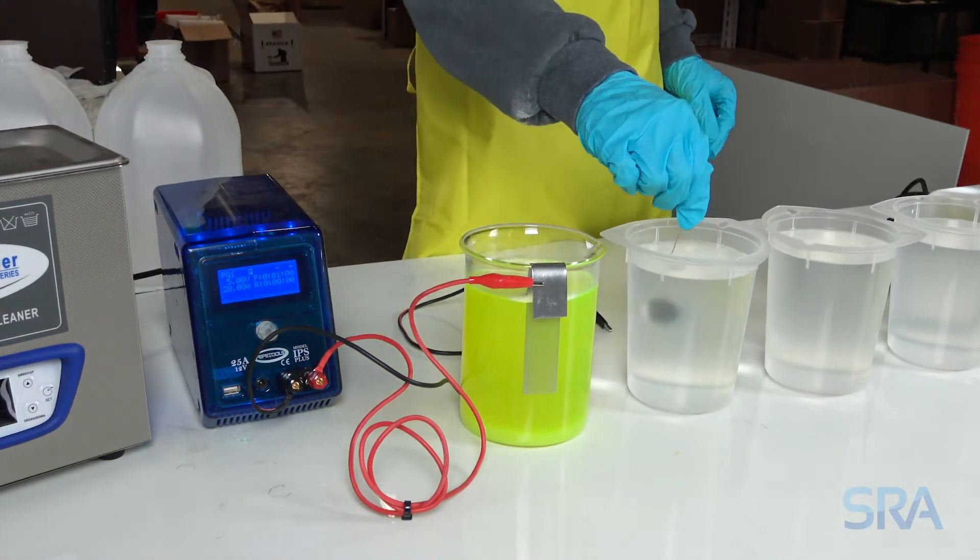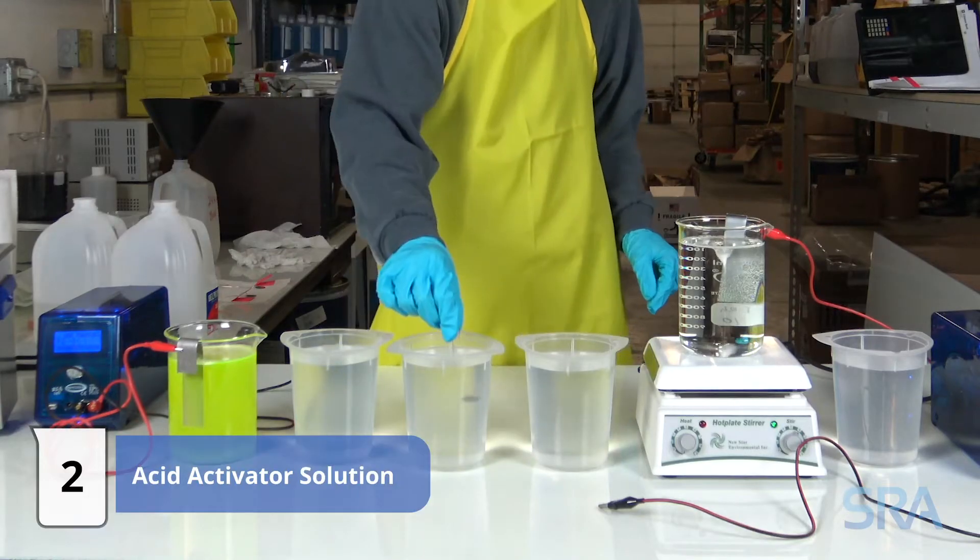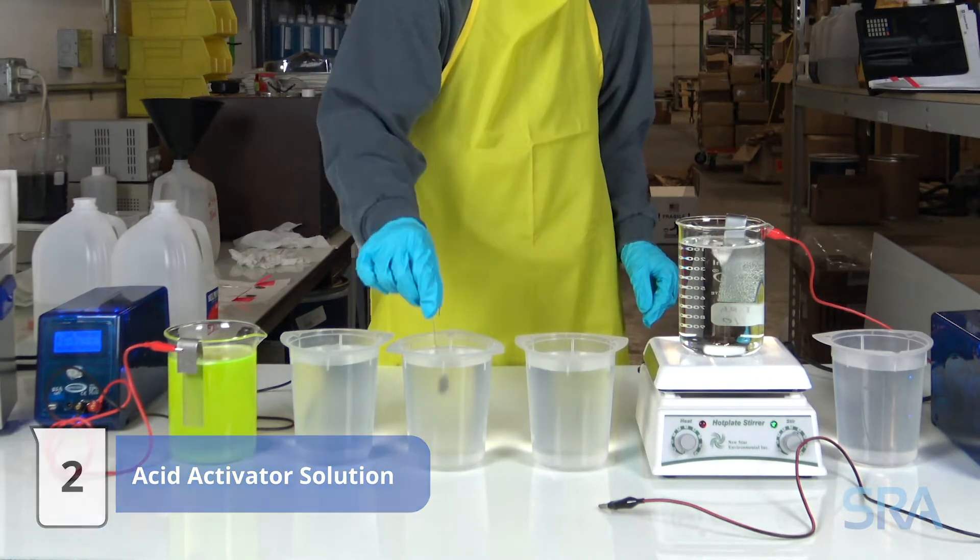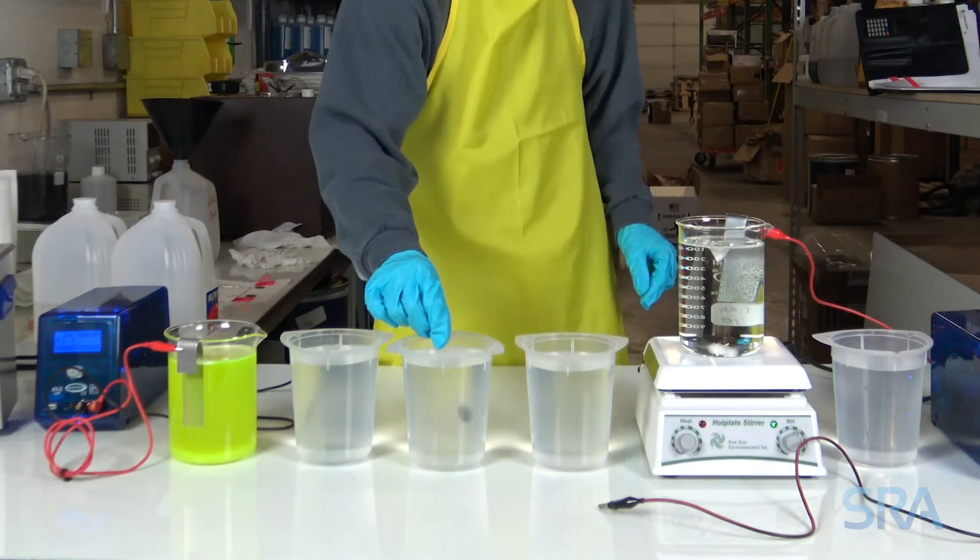Next, acid activate for a few seconds and follow it up with another distilled water rinse. This will neutralize the electro cleaner soap.